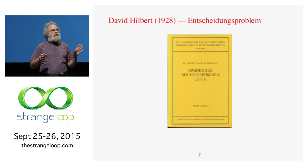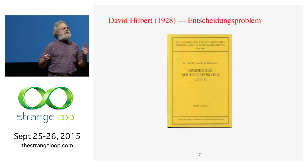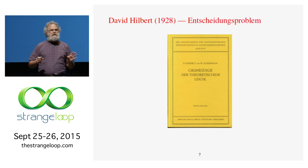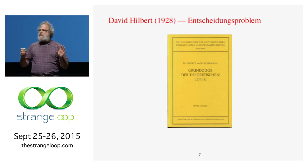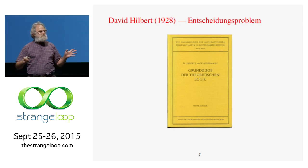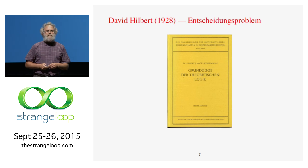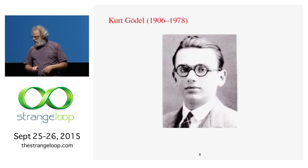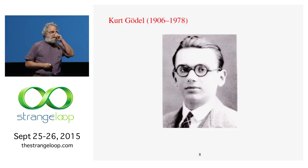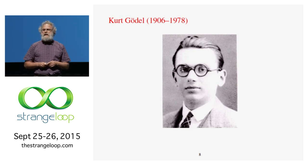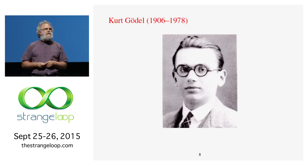What Hilbert was depending upon was the idea that logic is complete — meaning every provable statement is true and every true statement is provable. Sounds reasonable, right? Except of course in 1930, in Vienna, Kurt Gödel published his proof of the incompleteness theorem, and this meant that Hilbert was, to use a technical term, screwed.